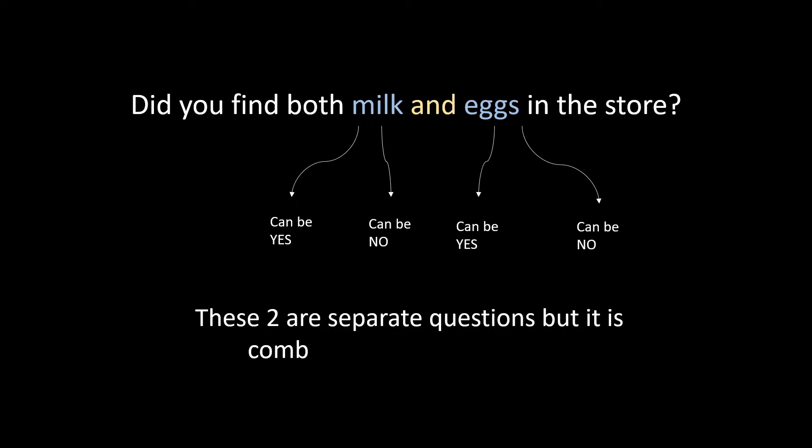The finding of milk can be yes or can be no. Finding of eggs can be yes and it can also be no. These two are separate questions but are combinedly asked using AND. So what should be the answer of the combined question?